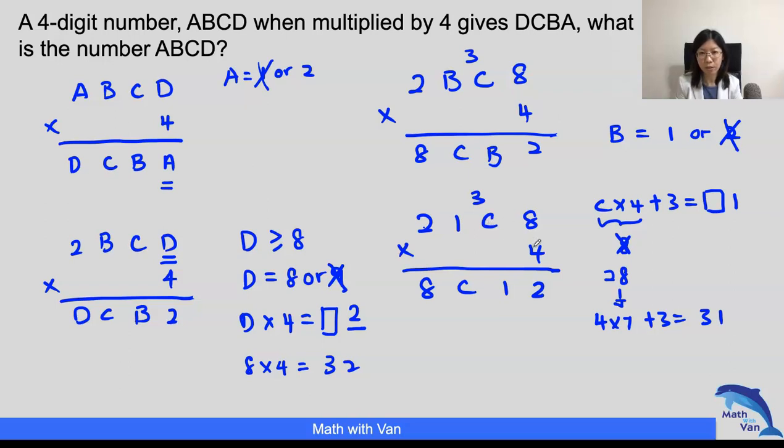If I put a 7 here, what do I have? 7 times 4 is 31, so I would have a carryover here. So 1 times 4 is 4, 4 plus 3 is 7, so this is 7 as well. So everything matches now. So it has to be 2, 1, 7, 8. And when we multiply by 4 it will give us 8, 7, 1, 2. Yeah. Okay. So our ABCD is 2, 1, 7, 8.